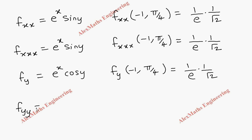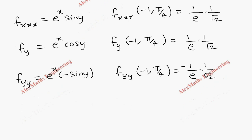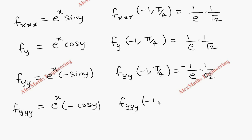For fyy, e power x is constant and the derivative of cos y is minus sin y. So fyy of minus 1 comma pi by 4 will be 1 by e, that is e power minus 1, then minus 1 by root 2. Then fyyy: e power x is constant, and differentiation of minus sin y is minus cos y. So fyyy of minus 1 comma pi by 4 will be minus 1 by e into 1 by root 2.